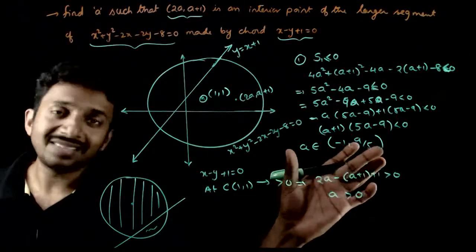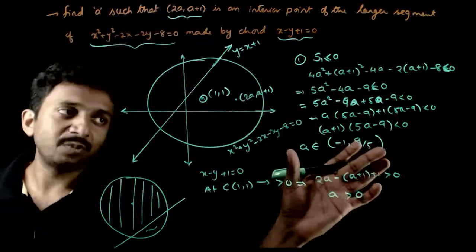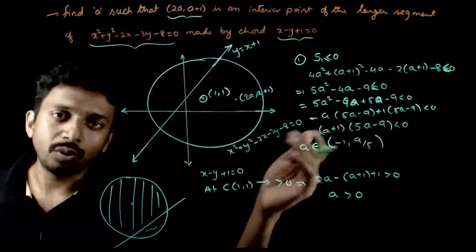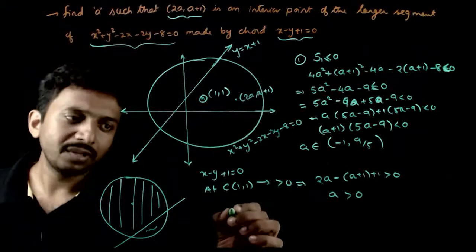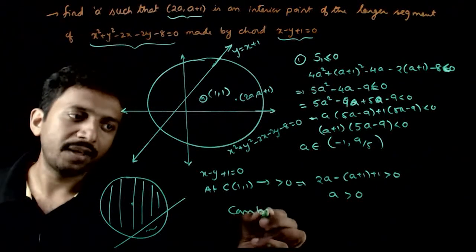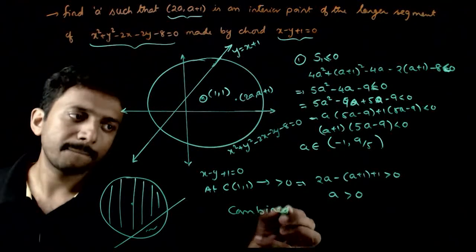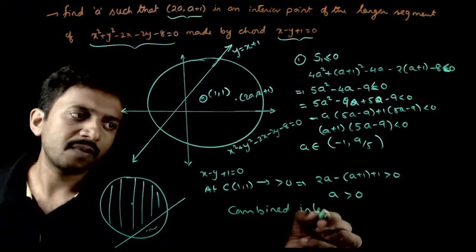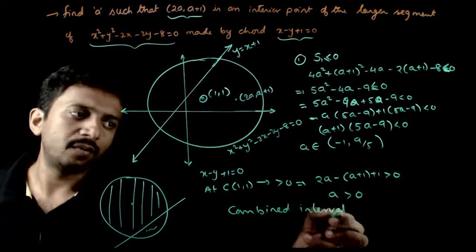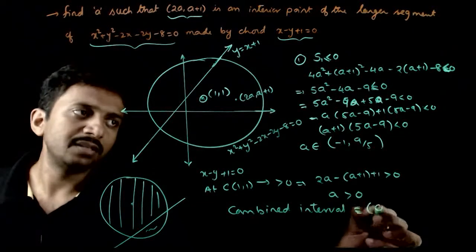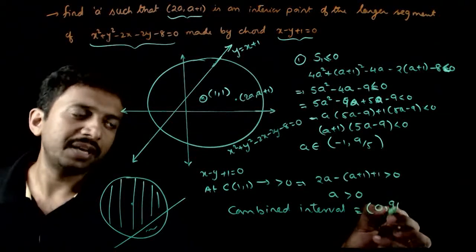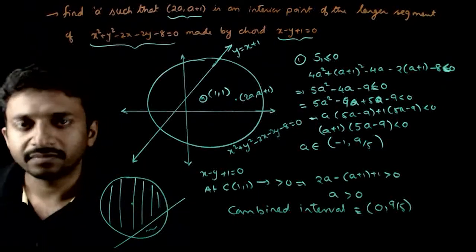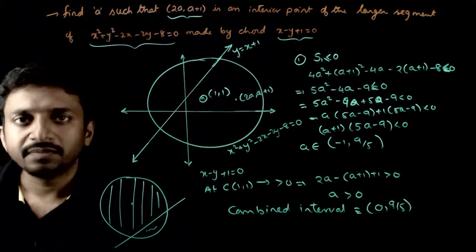To lie inside the circle, a must belong to (−1, 9/5), and to lie on the major segment side, a must be greater than 0. Combining both conditions, the combined interval is (0, 9/5). Thank you.